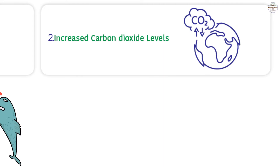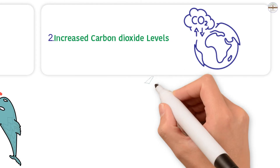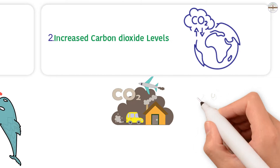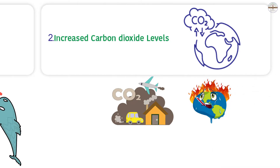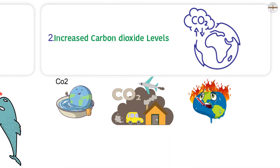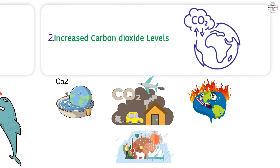Increased carbon dioxide levels are another concern. The ocean is very important in terms of climate change — one quarter of the carbon dioxide that humans produce is taken up by the ocean. Carbon dioxide is one of the gases that make the earth hotter, so when the ocean takes CO2 from the air, the planet gets cooler. Ocean acidification reduces the ocean's ability to remove CO2 from the air. As a result, more CO2 will build up in the air, making climate change worse, causing changes in weather, droughts, floods, and other disasters.